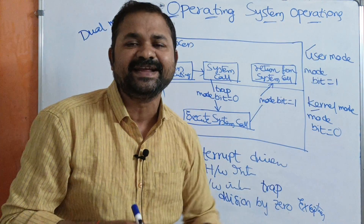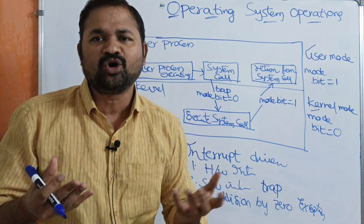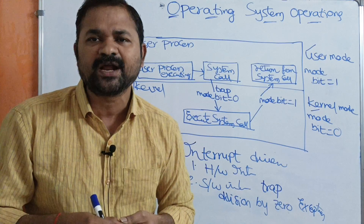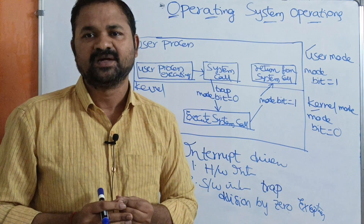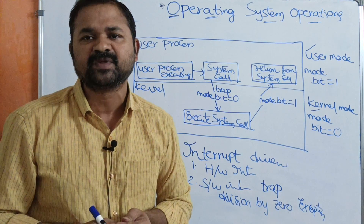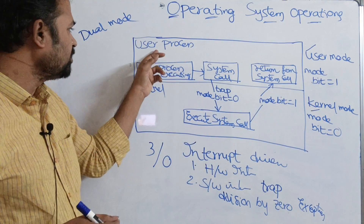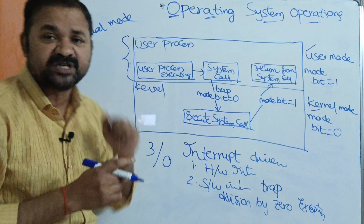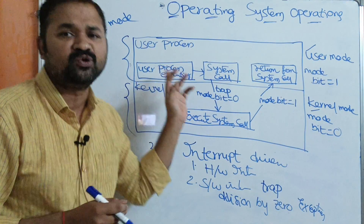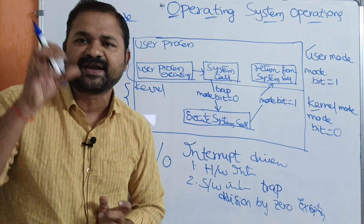In user mode, the CPU is executing user programs. Whenever we develop a program, it is called an application program — programs developed by users. During execution, that program is loaded into the main memory, at which point we call it a process. Looking at the diagram: one part specifies the user process and another part specifies the kernel process. Initially, assume the CPU is executing a user process, so the mode bit is one.